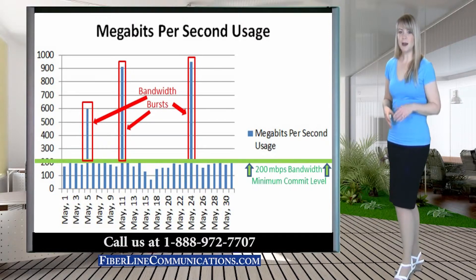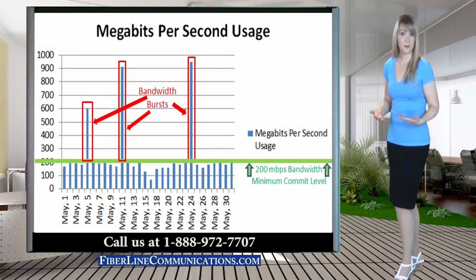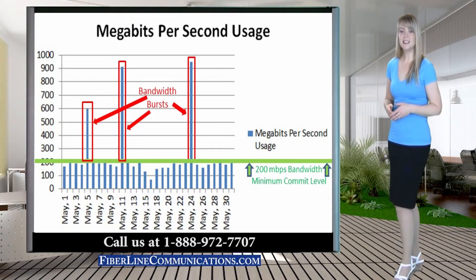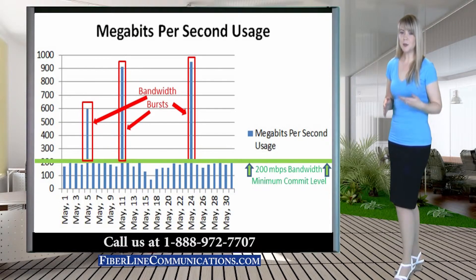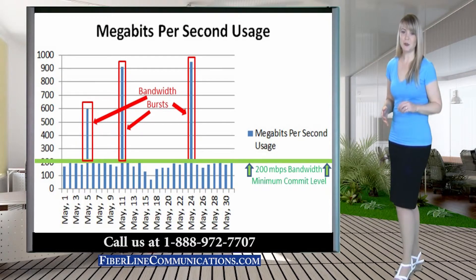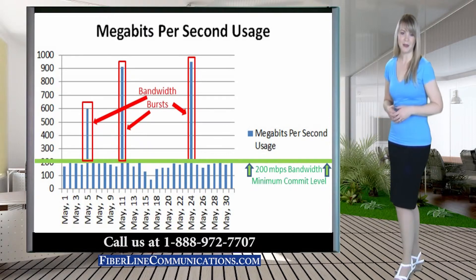If a company only requires infrequent spikes above their minimum for brief periods a few times a month, utilizing burstable bandwidth will probably save them significant money on their monthly bill. However, if this company finds that they must burst above their minimum for long periods of time or frequently throughout the month, it is usually less expensive to purchase the amount of bandwidth they commonly use rather than burstable bandwidth.